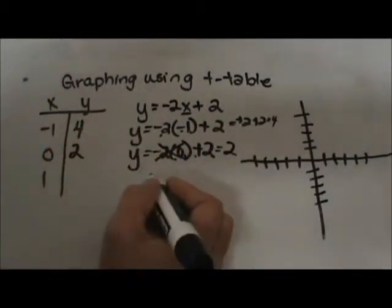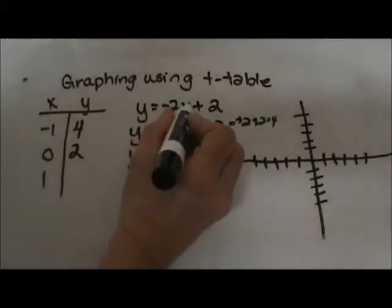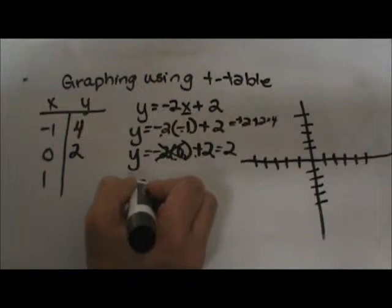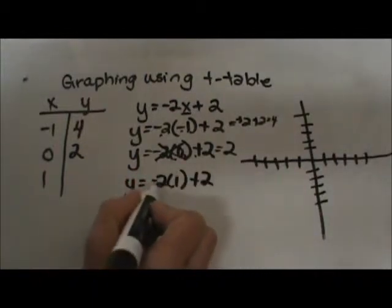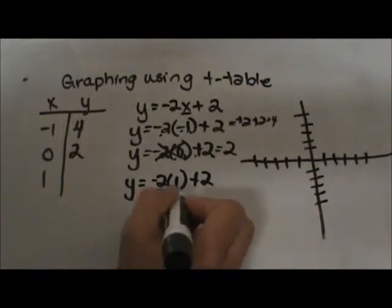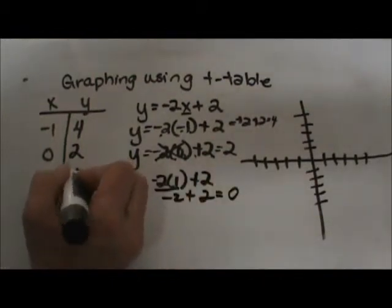Now let's go down and plug in positive 1 for x. So y equals negative 2 times 1 plus 2. Negative 2 times 1 is negative 2 plus 2, which is zero, so my output is zero.